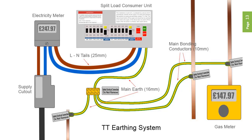The external earth fault loop impedance, or ZE, is high — massive in some cases — and should not exceed 200 ohms. Because of this high value, a TT system will always have additional RCD protection provided.